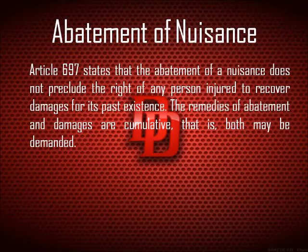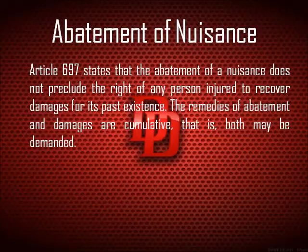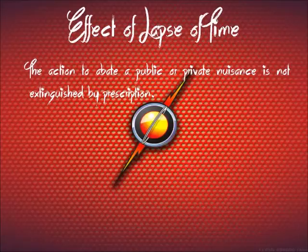Abatement of Nuisance: Article 697 states that the abatement of a nuisance does not preclude the right of any person injured to recover damages for its past existence. Meaning, the remedies of abatement and damages are cumulative — that is, both may be demanded. Effect of the Lapse of Time: The action to abate a public or private nuisance is not extinguished by prescription.